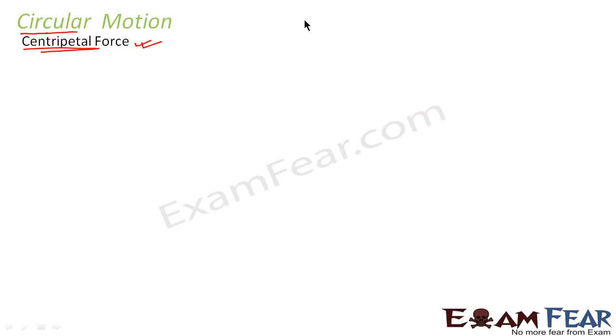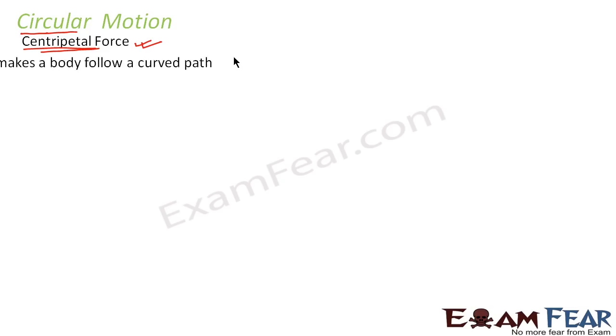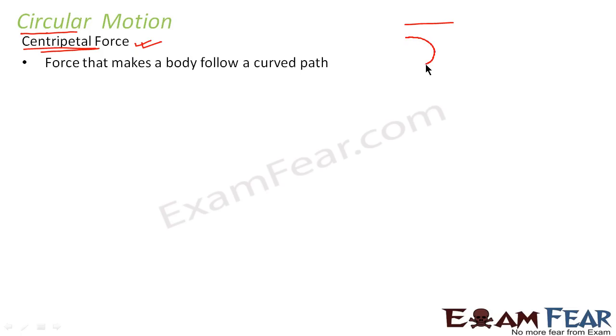When we talk of circular motion, it is very important to talk about centripetal force. As we discussed earlier, the reason behind motion is a force — force always causes motion. So the force which is the cause behind circular motion is the centripetal force. That is the force which makes an object move in a circular path, or in a curved path. That force is called centripetal. The name itself shows that it involves moving in a circular path.